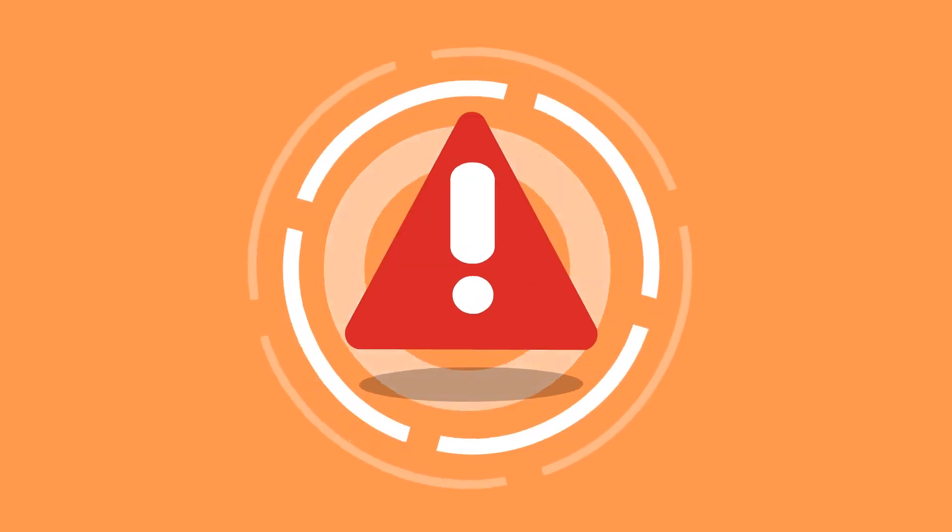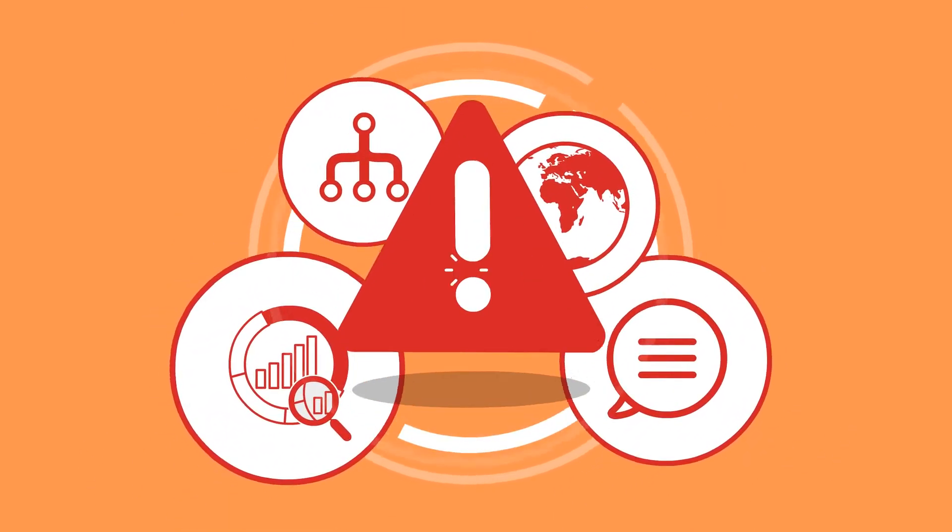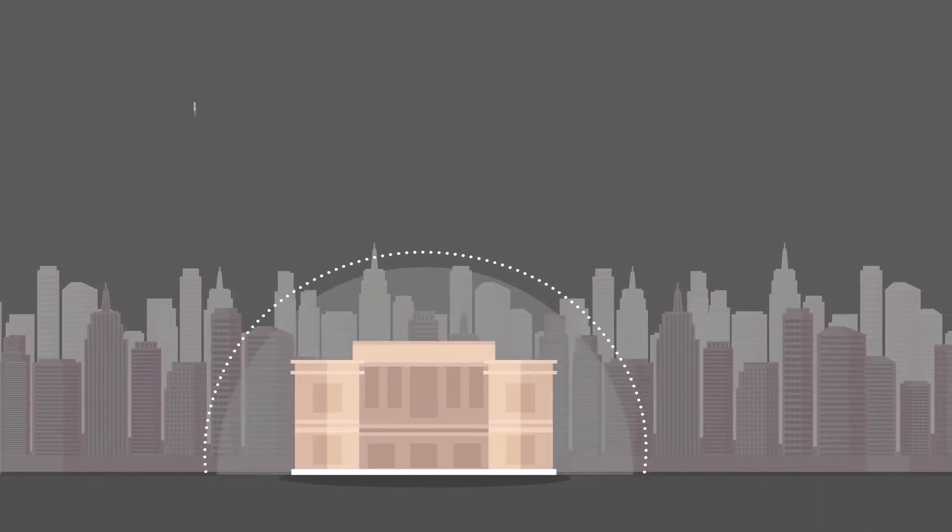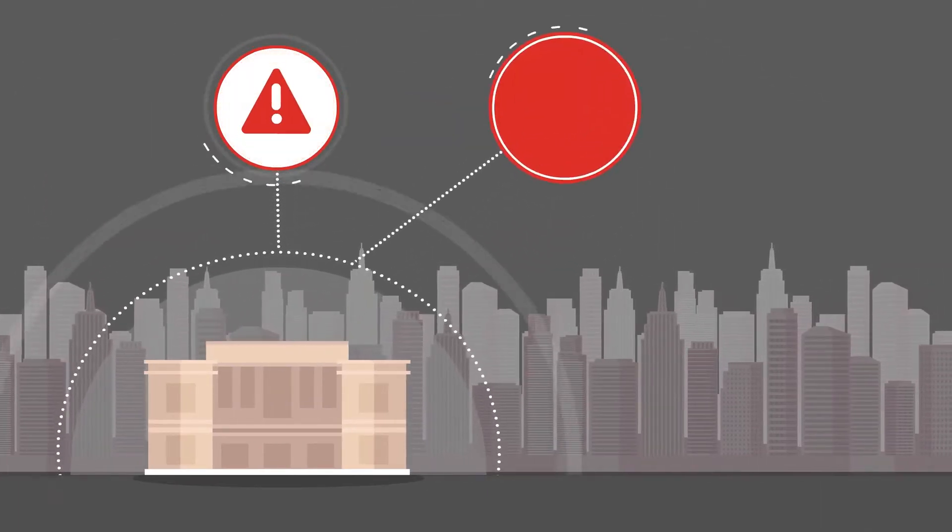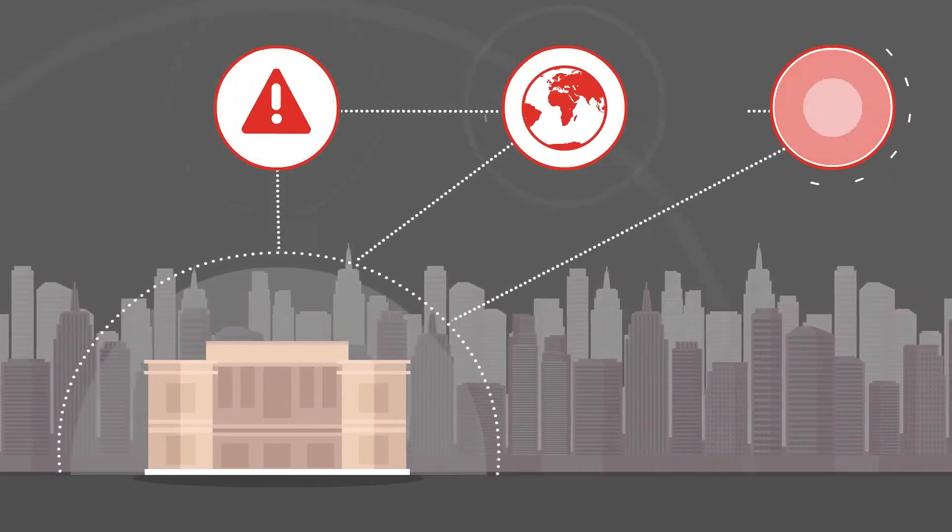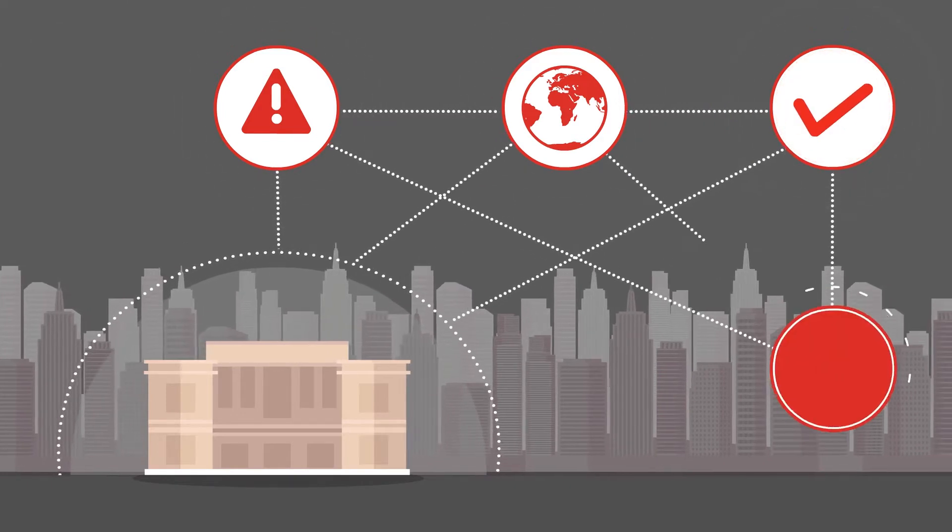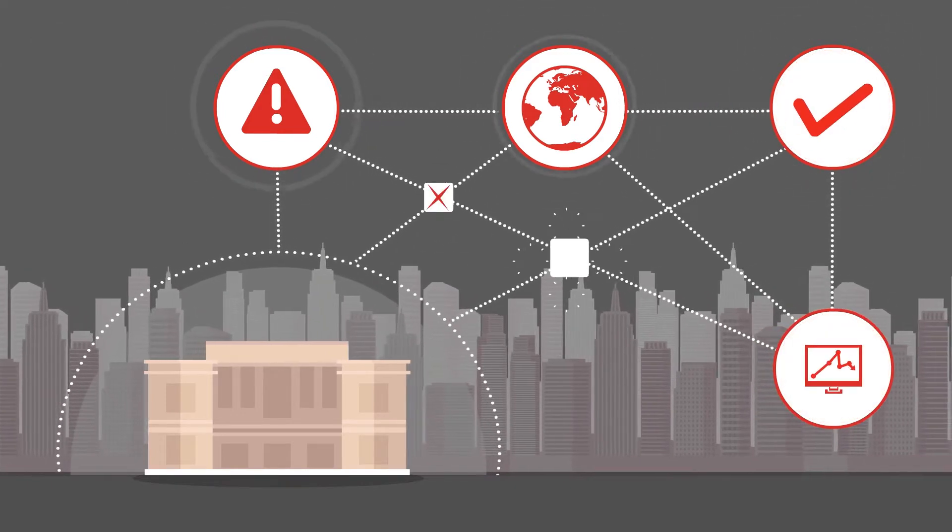The current process to assess critical events and respond is typically disjointed and full of noise. Companies use different and often incompatible systems for notifying people of risks, initiating incidents, and managing response.